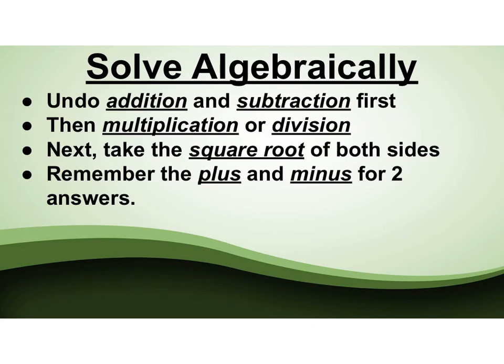To recap, when you're solving algebraically, you want to undo addition and subtraction first, then move on to the multiplication and division. Next, take the square root of both sides. Remember your plus and minus, so you get two answers. Good job.